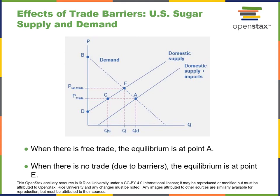The effects of trade barriers on sugar supply and demand: when there's free trade, equilibrium is at point A. When there is no trade, the equilibrium is at point E. With no trade, the quantity is somewhat reduced and the price is somewhat higher, whereas free trade puts the quantity demanded higher and people simply want more.